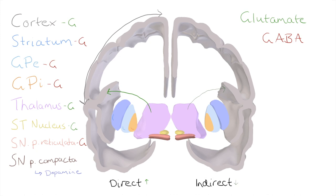Let's get stuck into the direct pathway first. The cortex initially provides excitatory input to the striatum, which is going to increase its level of GABA output. That GABA output is going to act on the globus pallidus interna and the substantia nigra pars reticulata in the direct pathway. These both release GABA on the thalamus, but because they've been inhibited by the striatum, that GABA output is going to be decreased, which allows the thalamus to provide a strong excitatory output to the motor cortex — seen as increased muscle movement.